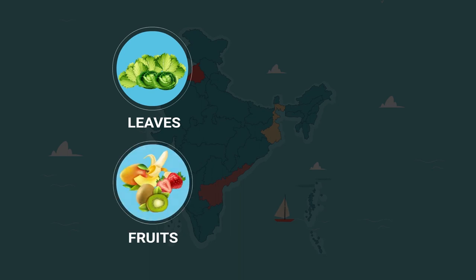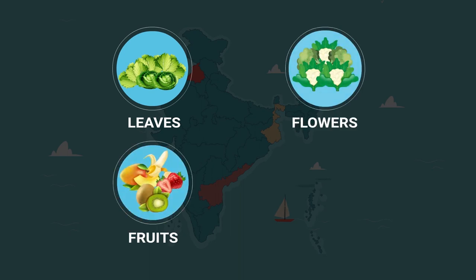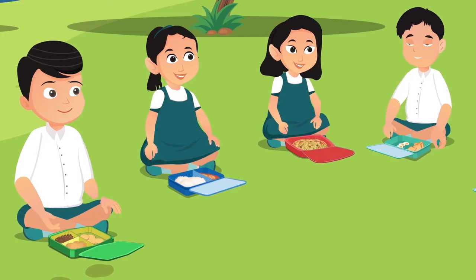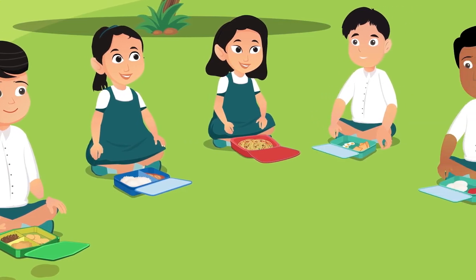Culture determines if people consume vegetarian, non-vegetarian, or other specific kinds of food items. All parts of a plant — including leaves, fruits, flowers, and even roots — are consumed as food.